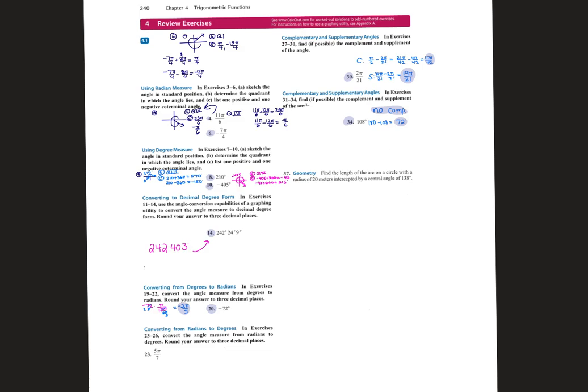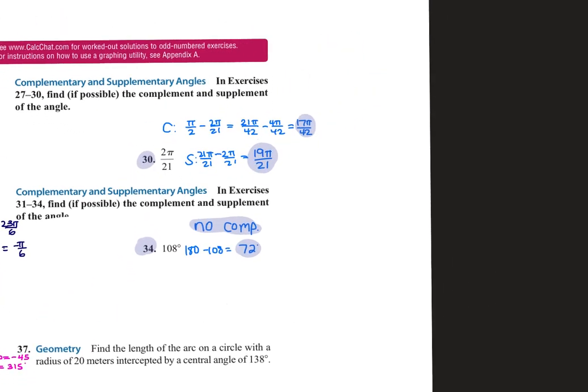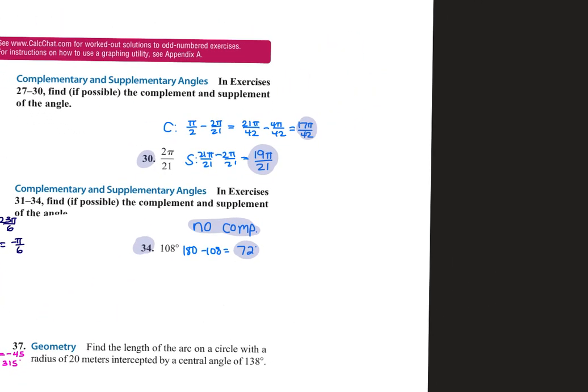Problem 30? Yes, so 30 is 2π over 21. To find the complement, we do π over 2 minus the angle, so 2π over 21. I'd have to multiply this by 21 and this by 2, so it has a like denominator.